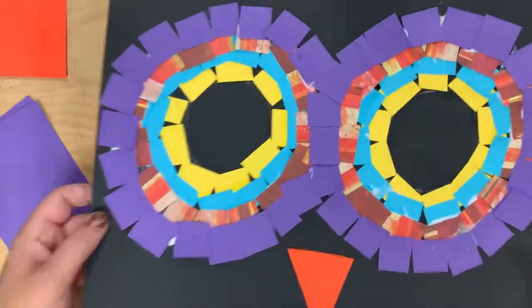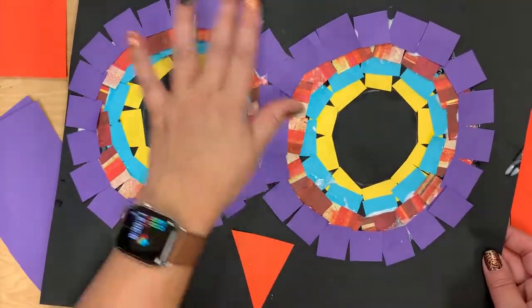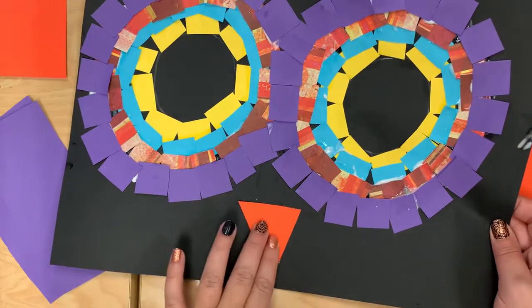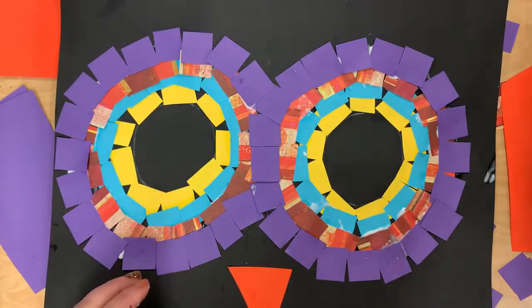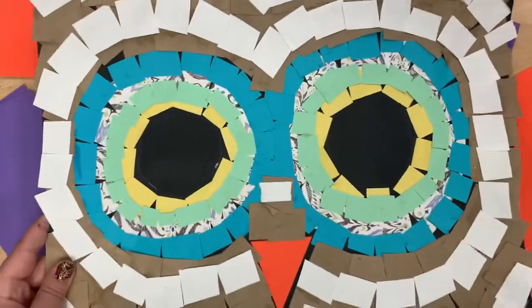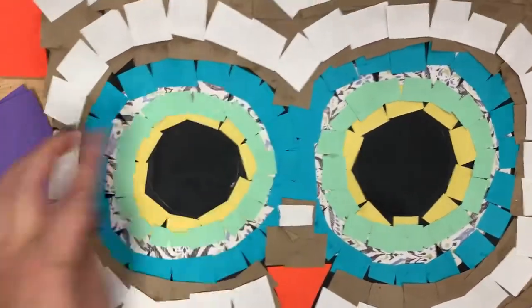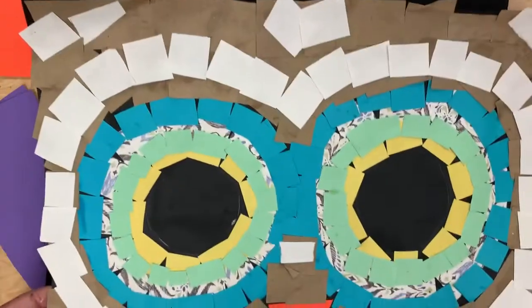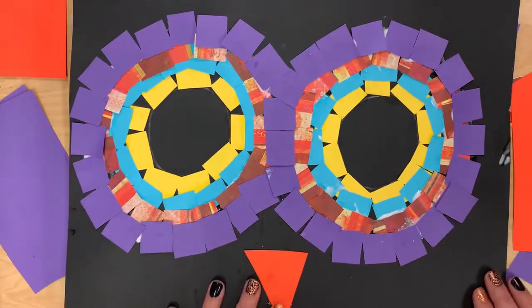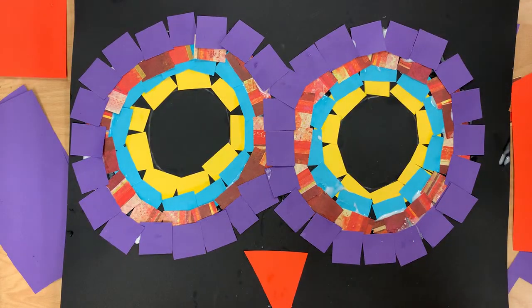When you've done two more rows, one a fancy row, one another bright row, and you've added a beak, then you're going to put it on the drying rack. Next time you come, we will add neutral colors. Those are not bright colors to fill in the rest of our owl. Put it on the drying rack and then you may free draw.